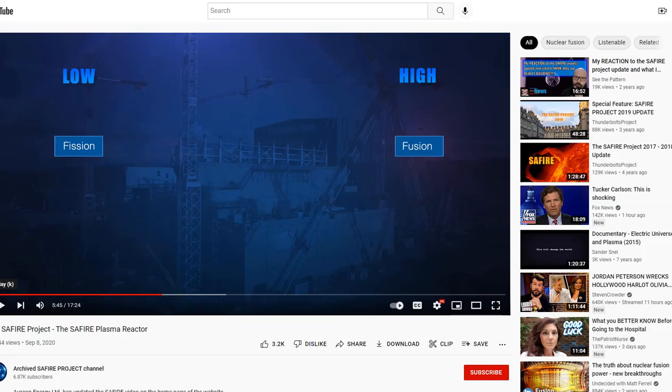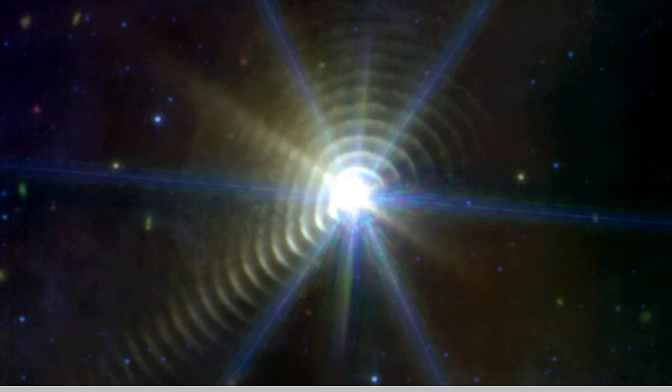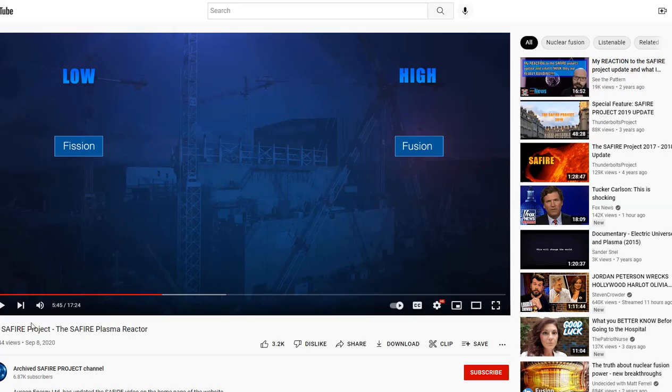And there has even been a team, the Sapphire Project which consists of many scientists that have to do with the Thunderbolts Project but scientists specifically that are working on plasma physics, plasma cosmology, and the electric universe model. And before we get into this video, remember what this looks like. Because the team had no idea what they would witness when they turned on their artificial plasma sun at the Sapphire Project.